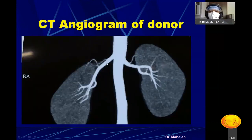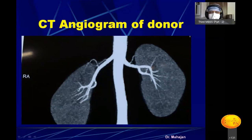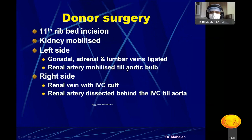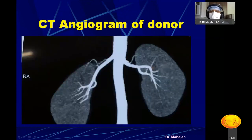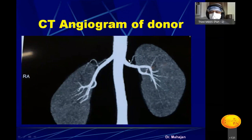A CT angiogram is shown here. You can see the aorta, the right renal artery, and the left renal artery. This is a single artery with branching. During donor nephrectomy, knowing this anatomy tells you exactly where to place the tie and where to cut the renal artery. The CT angiogram shows all the renal architecture including capsular branches and intrarenal vasculature. We cut here to get a good length of both artery and vein.